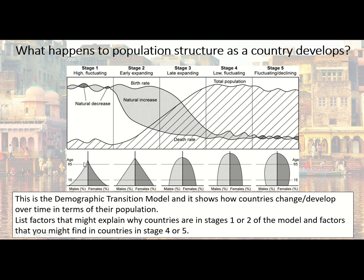Stage one applies to very lowly developed or less developed countries. This is called a high fluctuating population demographic, meaning both birth rate and death rate are very high. They're having lots of children but lots of people are also dying, which cancels out population increase. The population stays low and fluctuates slightly without really increasing or decreasing. In fact, almost no country in the world is at stage one today.